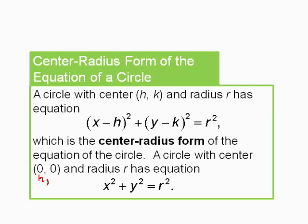You can see that if we let the center be h and k and put in 0 for h, we get x minus 0 squared, and 0 for k gives y minus 0 squared, so that simplifies to x squared plus y squared equals r squared.